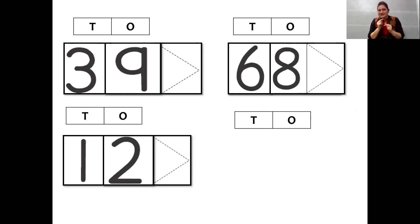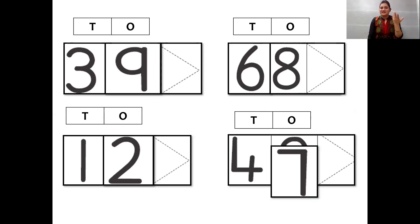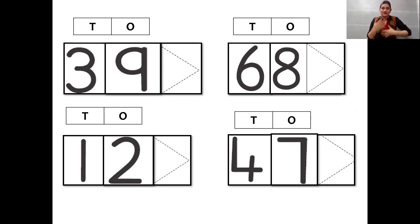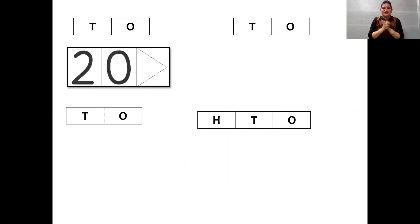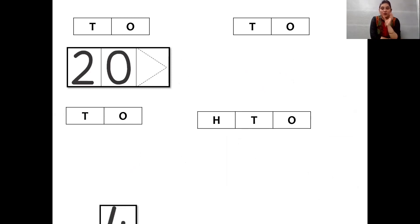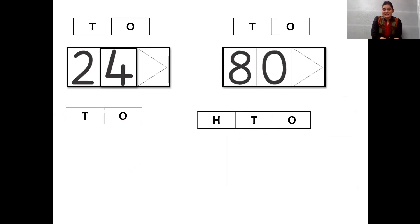Let's see the next number. Four tens makes 40. Under the tens place we can see four, and under the ones place we can see number seven — yes, it is 47. Twenty — so two tens makes 20. And four ones — twenty-four. And eighty — eight tens and one one — so eighty-one.